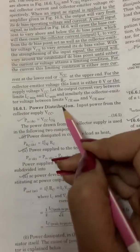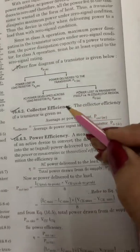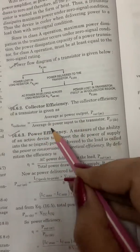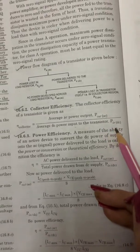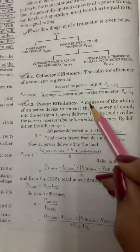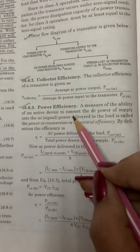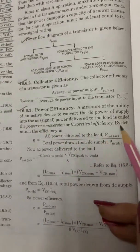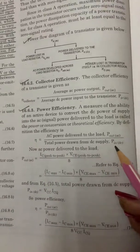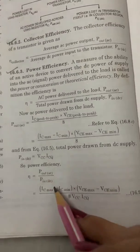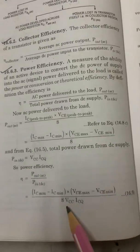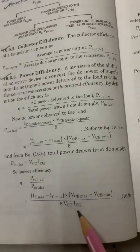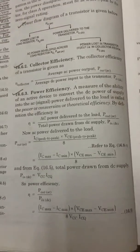Collector efficiency is defined as the ratio of average AC power output to average DC power input to the transistor, that is P_out(AC) / P_TR(DC). Power efficiency is a measure of the ability of an active device to convert the DC power of supply into AC power delivered to the load — also called power, conversion, or theoretical efficiency. By definition, efficiency = P_out(AC) / P_in(DC). On solving, efficiency = (IC_max − IC_min)(VCE_max − VCE_min) / (8 × VCC × ICQ).